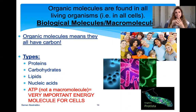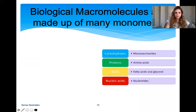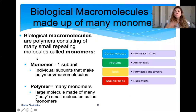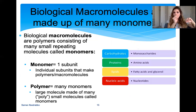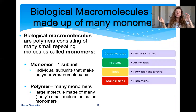Now the focus of this lecture: organic molecules, biological molecules, and macromolecules all mean the same thing. The four organic molecules we'll discuss are proteins, carbohydrates, lipids, and nucleic acids. They're called organic molecules because all of them have carbon in them — in science, 'organic' means carbon-based. Protein, carbohydrates, lipids, and nucleic acids all have a lot of carbon in them. These four macromolecules make up our cells — they're big molecules.